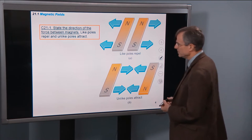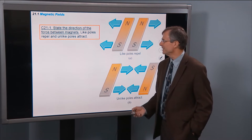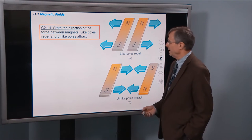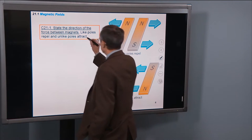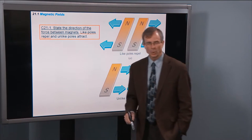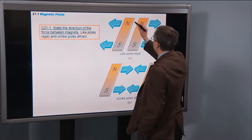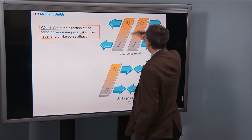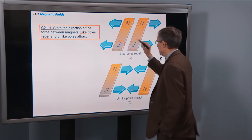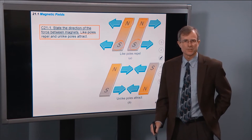The first concept in the chapter is one you're probably familiar with already: state the direction of the force between magnets. The answer is very similar to the force between charges — like poles repel. A north pole repels a north pole, and a south pole repels a south pole. It's just like like charges repel.